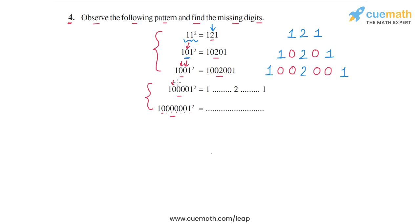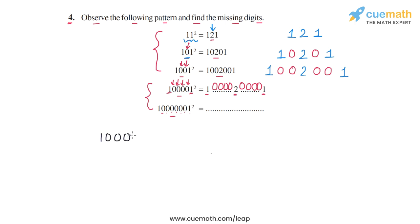In the fourth square, we have four zeros between the first one and the last one in the number. So between the leading 1 and the middle 2, we will have four zeros, and between the 2 and the trailing 1, we will have four zeros again. So 100001² = 1, followed by four zeros, then 2, then four zeros again, then 1.